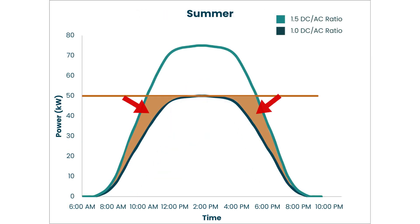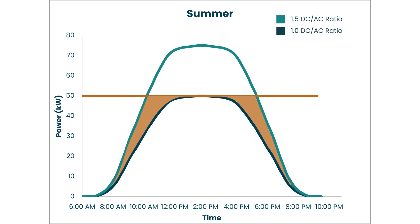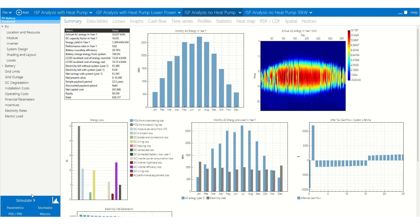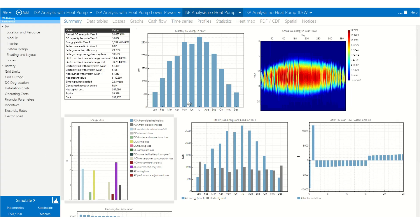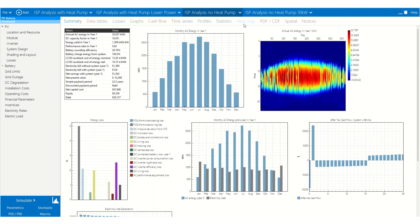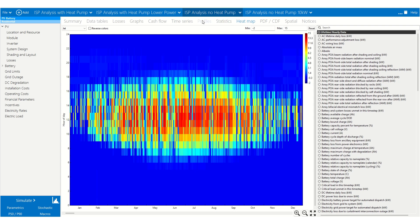Taking a look between summer and winter with a 1.0 and a 1.5 DC to AC ratio, you can see the extra energy you can throughput over the year. Most projects range from 1.2 to 1.4, but finding the right balance is a financial and modeling exercise, and it can really depend on whether it's a residential, commercial, or utility project. If there's energy storage attached to the solar project, the DC to AC ratio can get as high as 2.0 to 2.5.